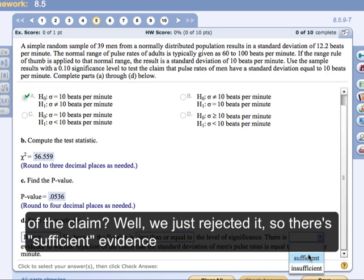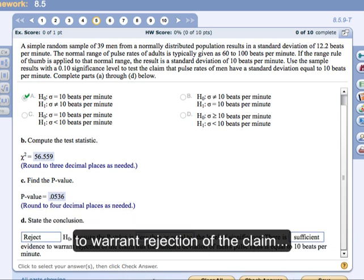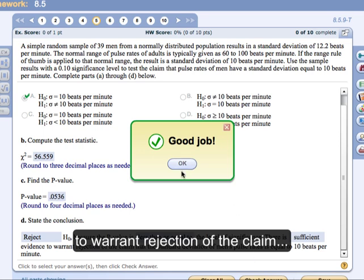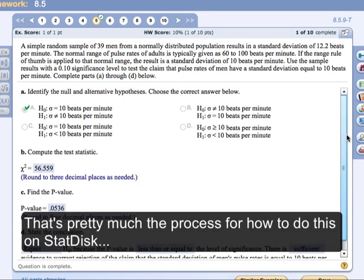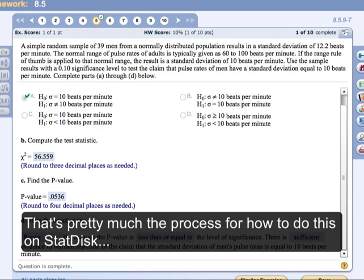We just rejected that it is. So there's sufficient evidence to warrant rejection of the claim. And that's pretty much the process for how to do this kind of problem on StatDisk.